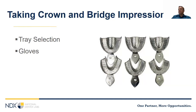Starting with crown and bridge impressions — the foundation is the tray. Not many offices use metal trays anymore, but it's pretty hard to distort a metal tray. We want to make sure that when we select a tray, it's well adapted to the mouth so we don't have really thick impression material, which is both expensive and limits accuracy. But we don't want it so tight that it can interfere with the patient's tissues and create a preload that leads to warping, especially with a triple tray.